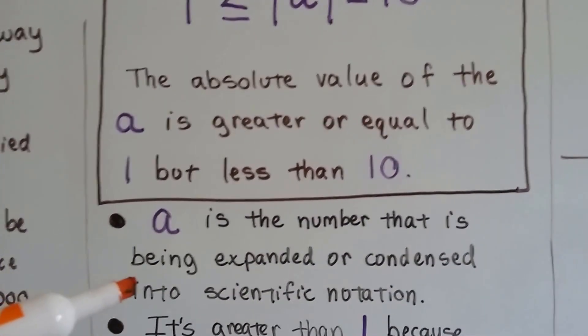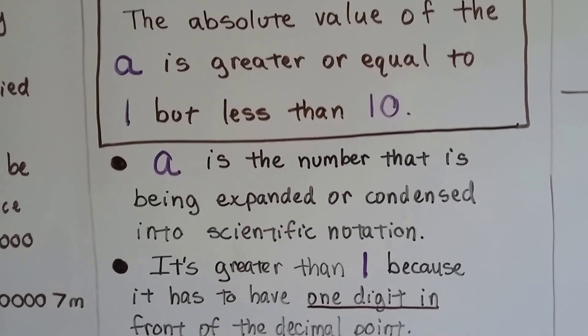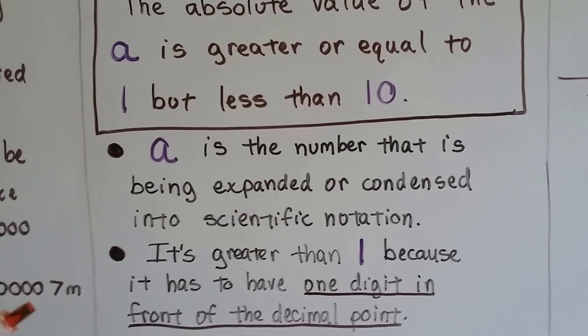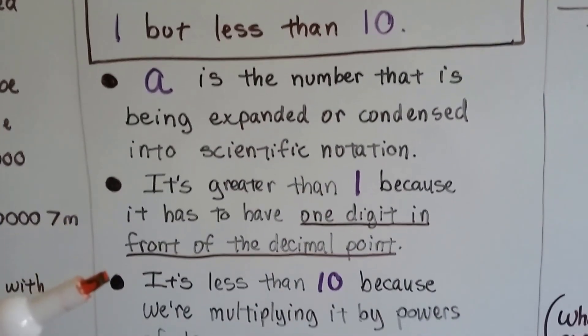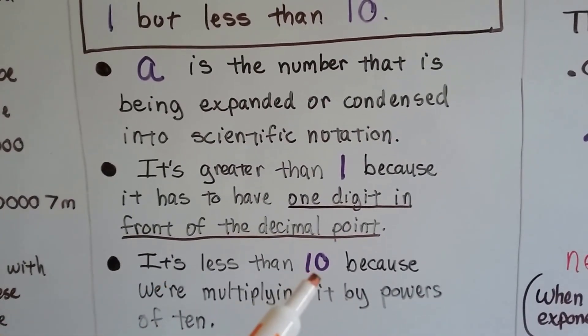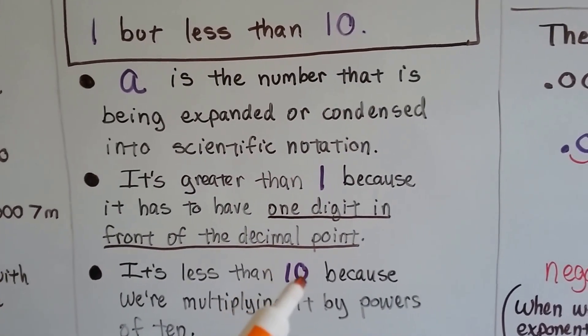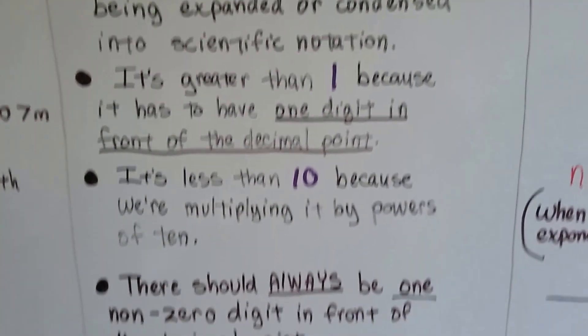It's being expanded or condensed into scientific notation. It's greater than 1 because it has to have one digit in front of the decimal point, and it's less than 10 because we're multiplying it by powers of 10. If it were more than 10, that would add another digit to the exponent. Instead of 7, it would be 8. So it has to be less than 10.